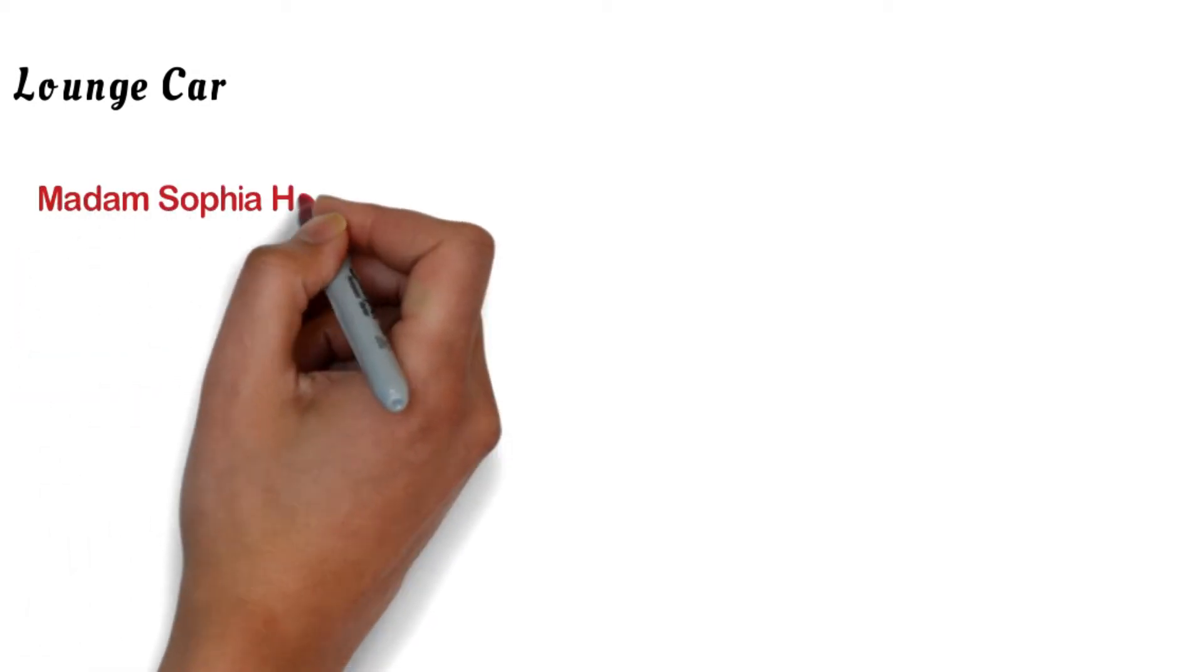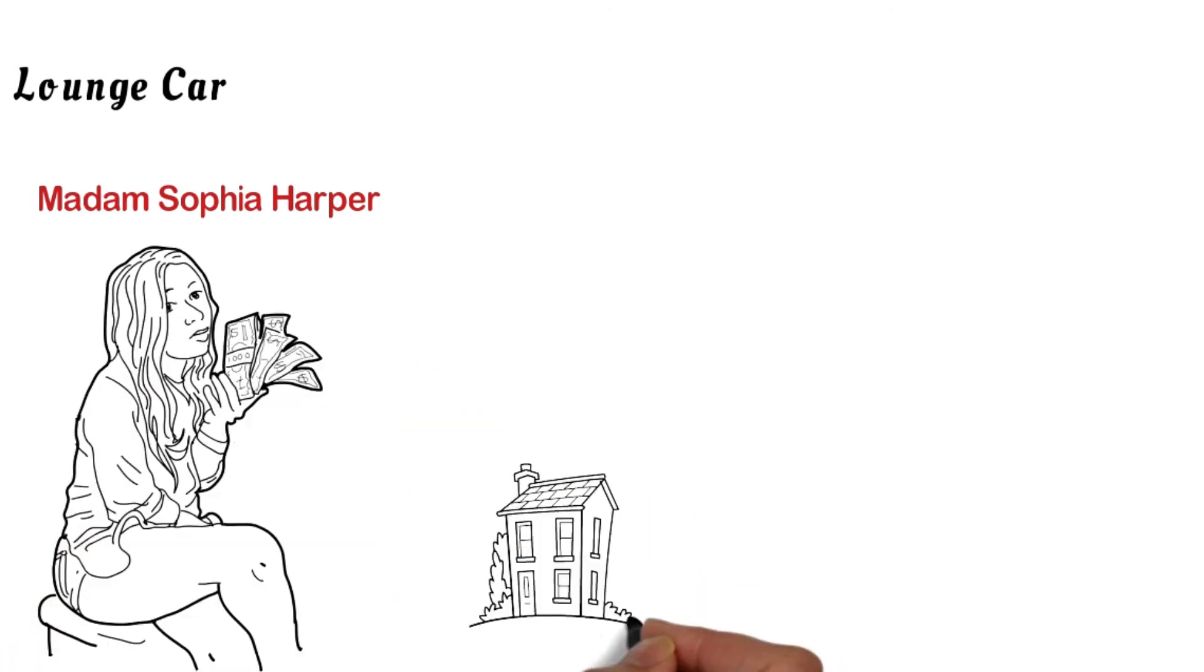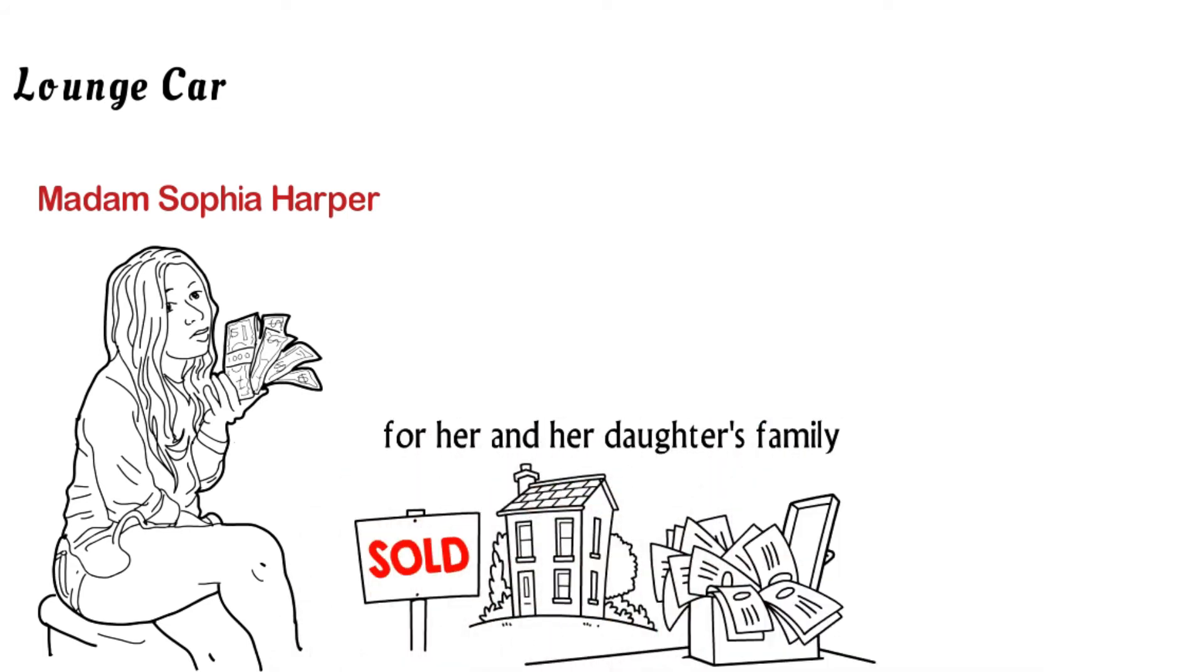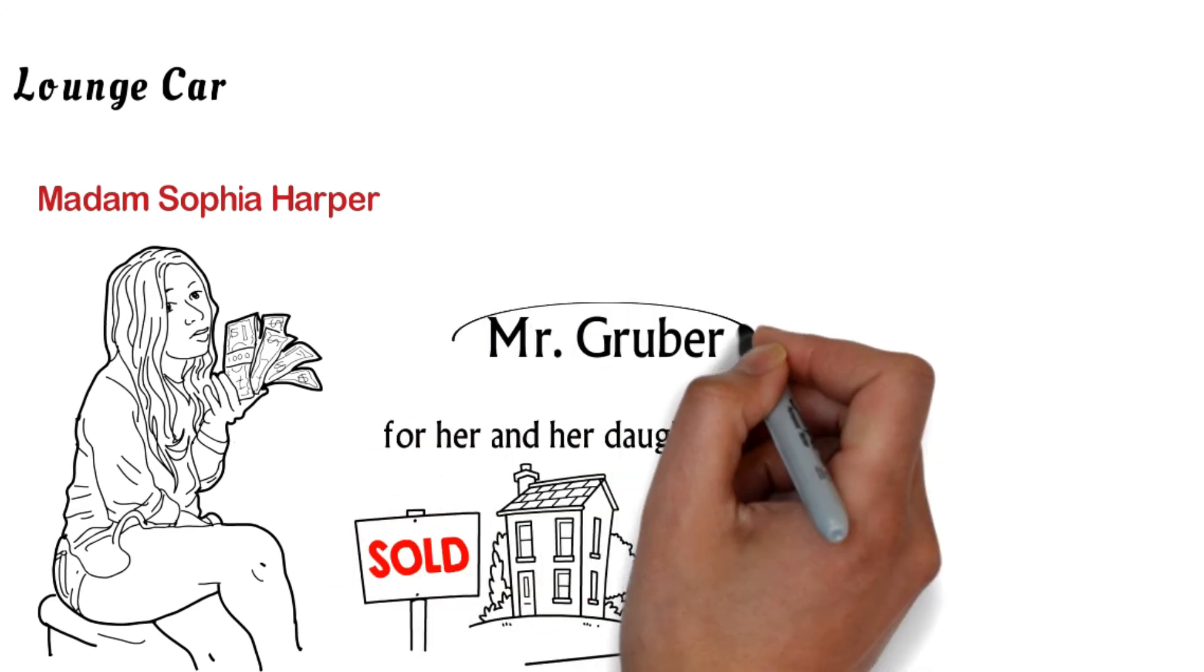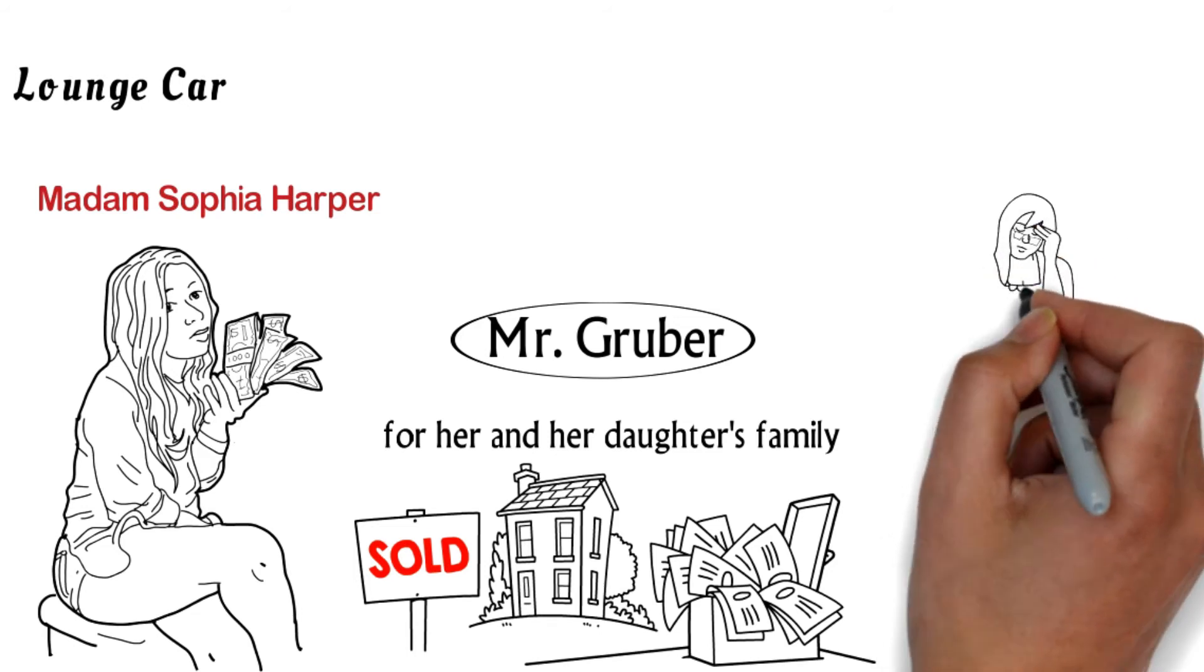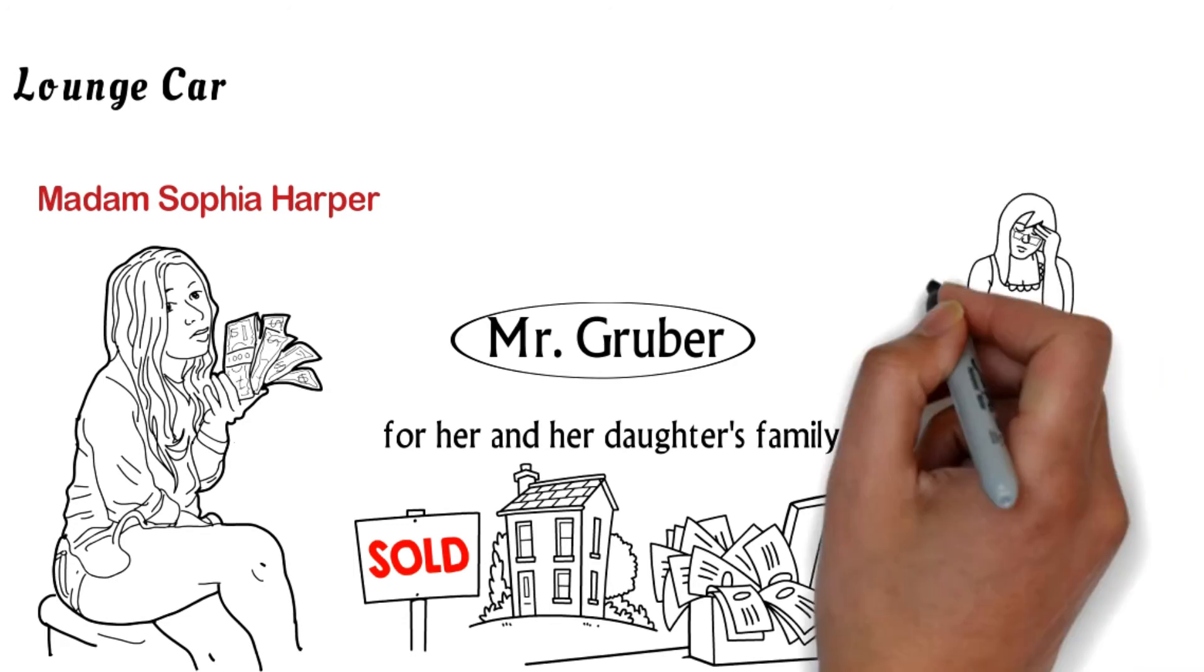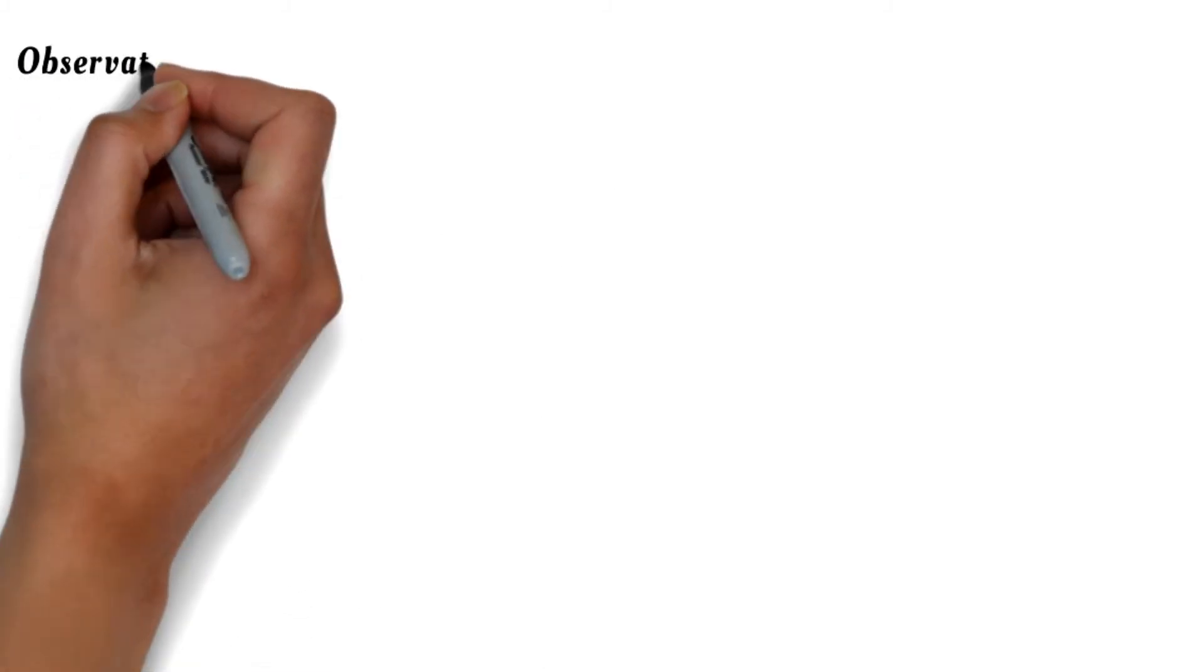In the lounge car, you will meet a somewhat disagreeable woman named Madame Sophia Harper. Madame Sophia is a proud woman who has come into a large sum of money. She intends to purchase a home in Austria for her and her daughter's family. The Madame does not know Mr. Gruber but had a few bad words about his strange behavior while boarding the train. She says that his demeanor made her nervous and she wished never to see him again. He reminded her of a man her late husband did business with a few years prior, but she cannot definitively say that she knows him.